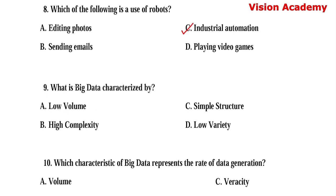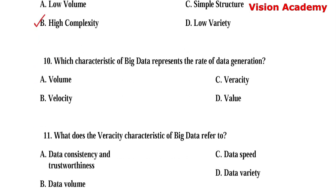Question number 9. What is big data characterized by? Option A: Low volume. Option B: High complexity. Option C: Simple structure. Option D: Low variety. Here, option B, high complexity, is the right answer.